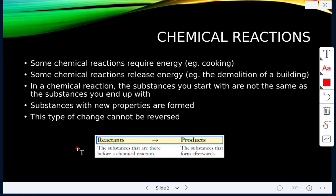So we discussed chemical reactions last class and how do we know that a chemical reaction has occurred. When you have a chemical reaction, the substances that you start with are not the same as the substances you end up with. Some chemical reactions require energy, for example cooking, and then some reactions will release energy, for example demolition of a building or fireworks. But with chemical reactions, usually some new substance is formed and that new substance will have new properties of its own.